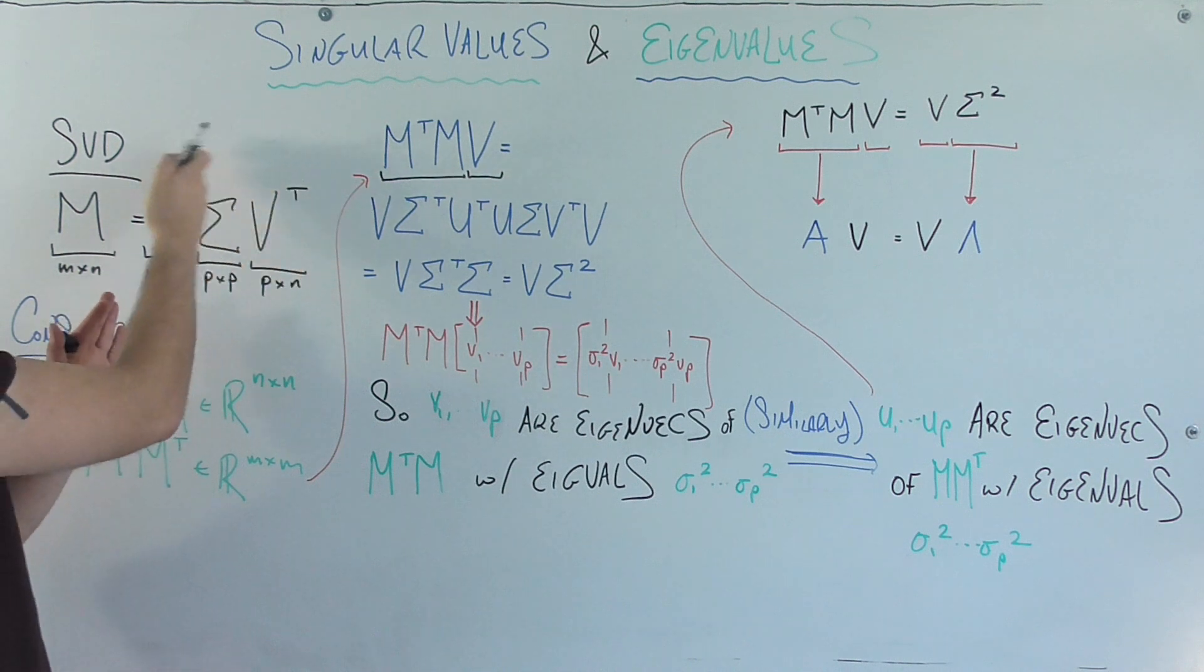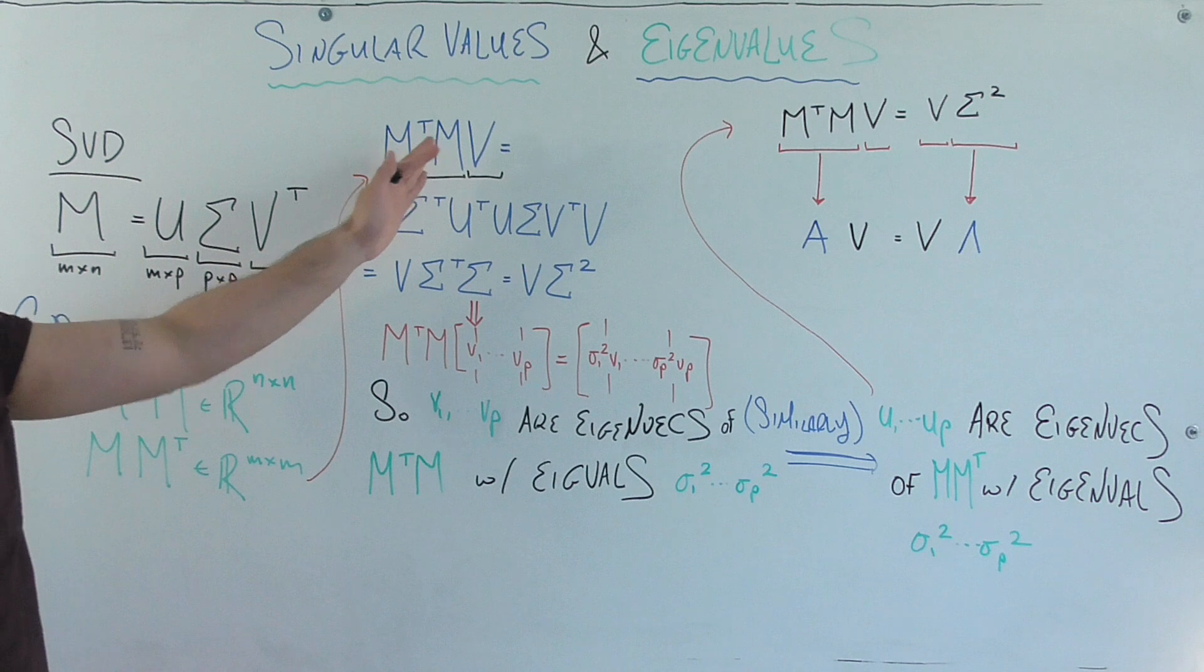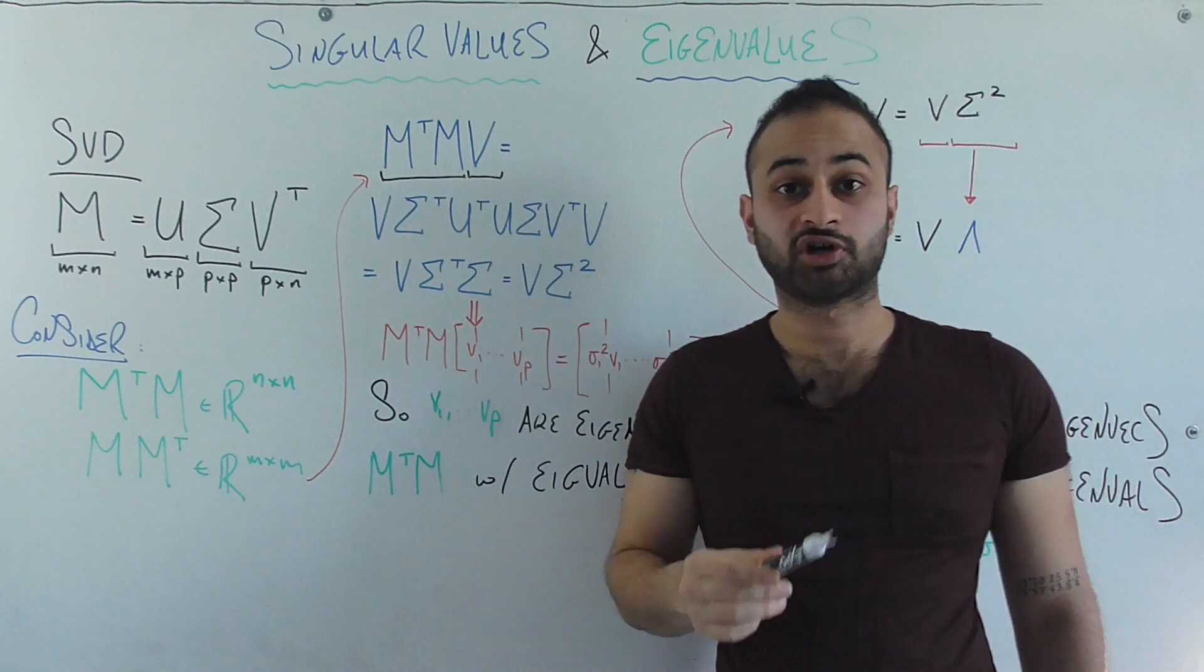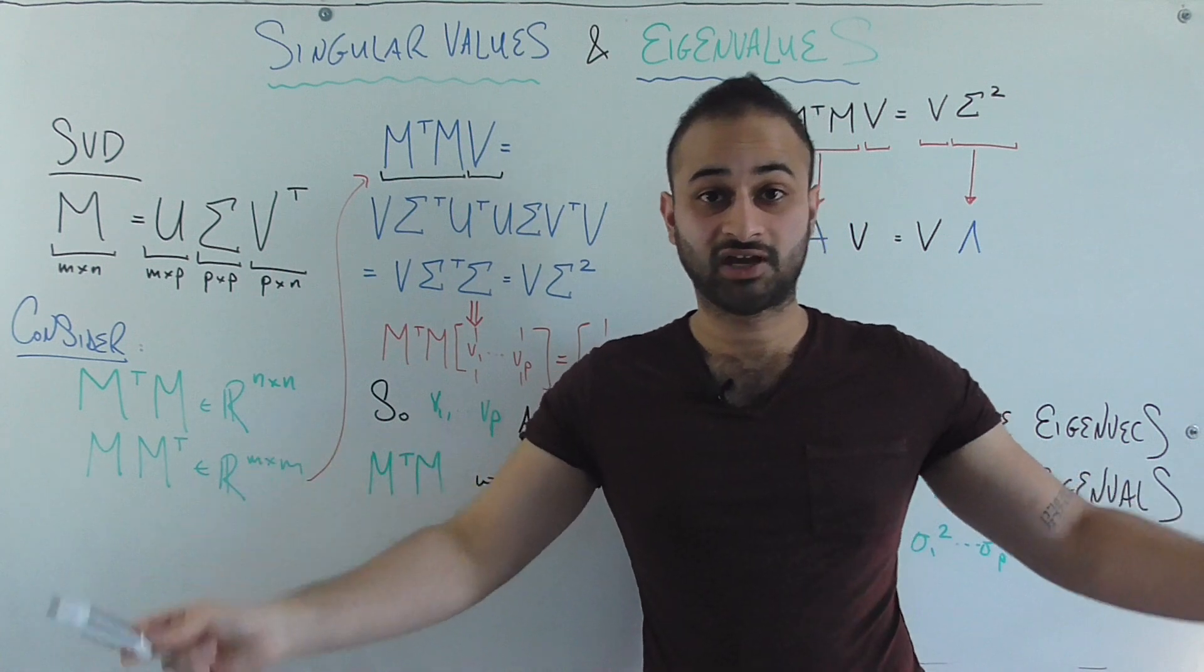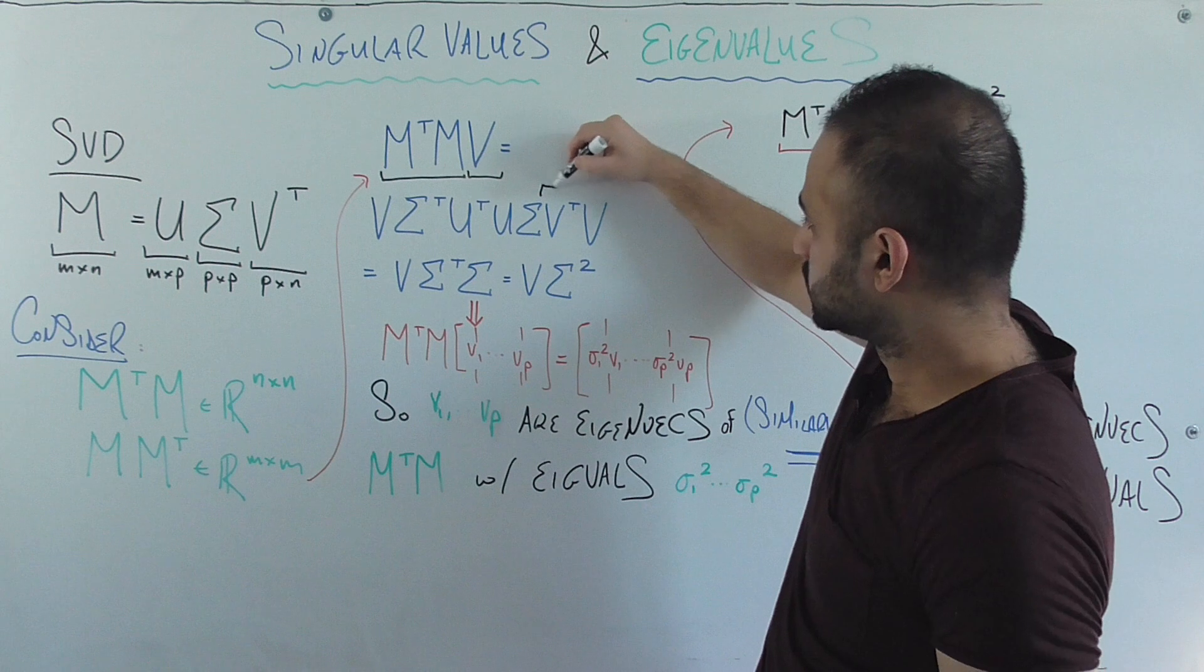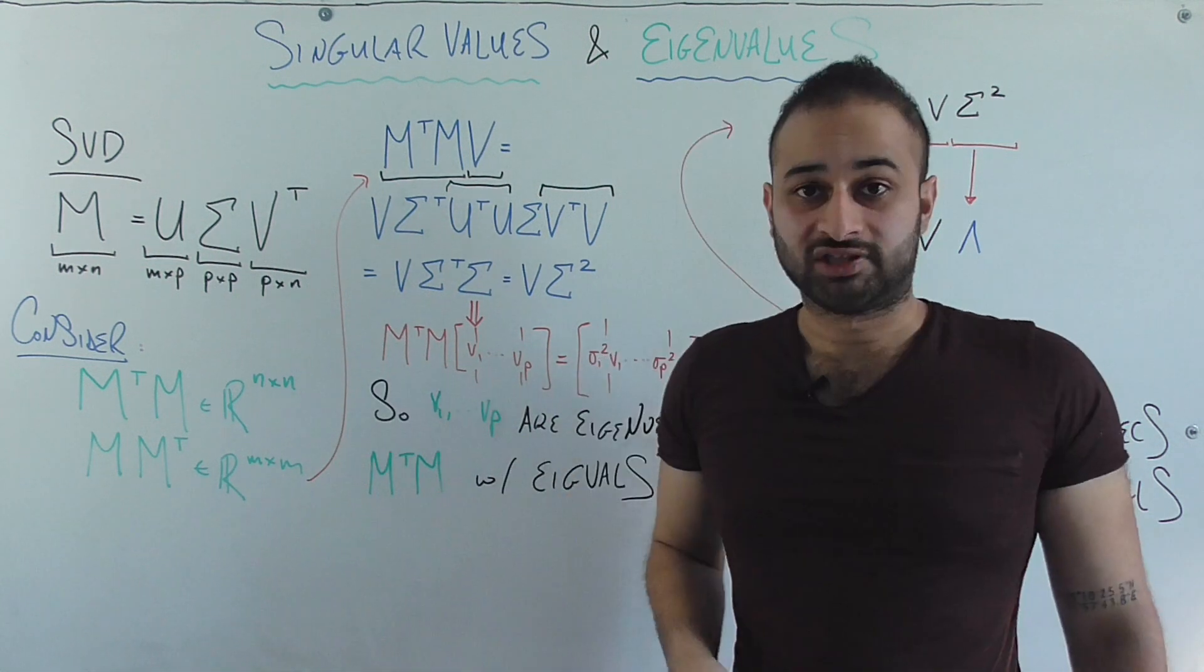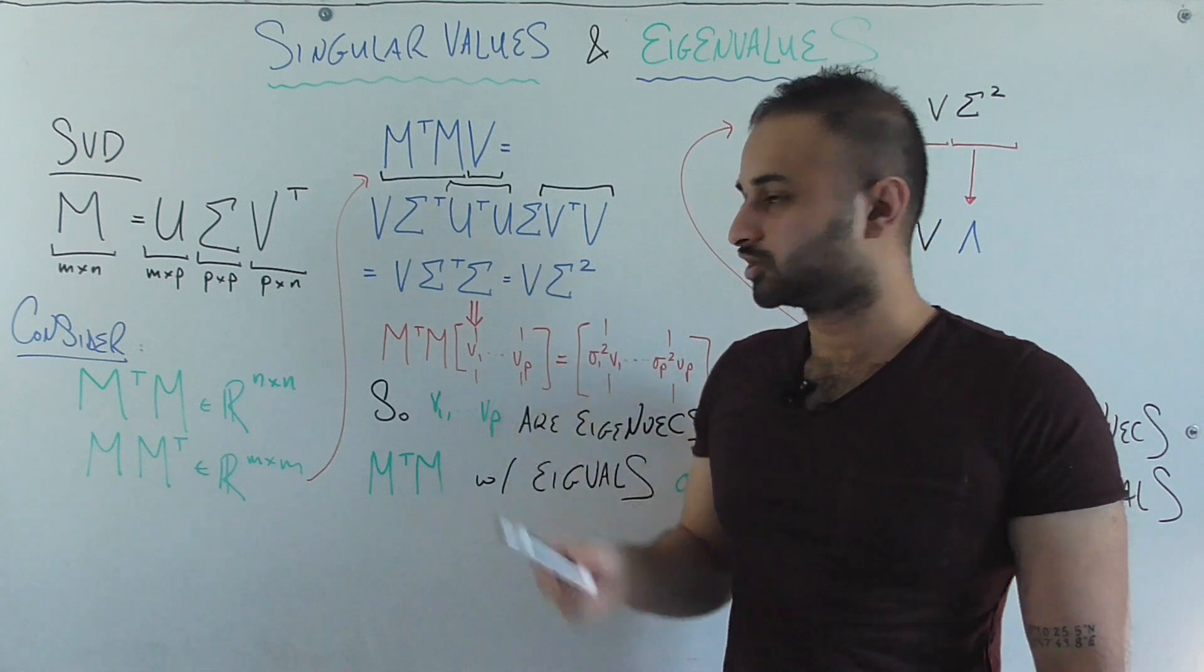So if I were to take the transpose of this guy, I'm going to get V sigma transpose U transpose, and then writing M just as you see it here, we get U sigma V transpose. And of course all that, which is the expression of M transpose M, gets multiplied by V. Now we can do lots of nice cancellations because of the properties we talked about earlier, namely V transpose V and U transpose U both are equal to the identity matrix because of the fact that U and V are orthonormal. So that's how we get to this step, which is V sigma transpose sigma, which is all that's left.